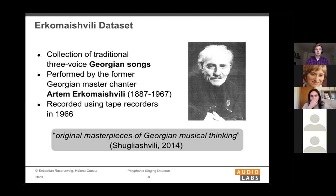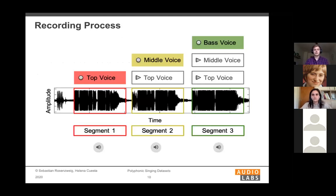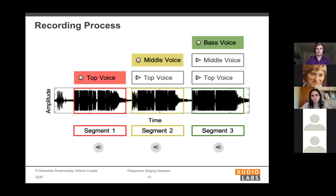Since Erkomashvili was one of the last representatives of his kind, he had to sing all three voices by himself. This was made possible by a special overdubbing recording procedure: at the beginning, he announced the song name and sang the top voice. The top voice was then played back while the middle voice was recorded on a second tape recorder. This procedure was repeated for the bass voice, with both top and middle voices playing back.